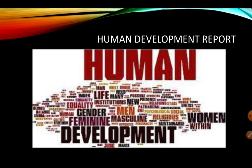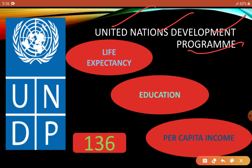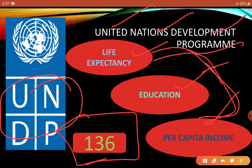Another important concept is the UNDP Human Development Report. UNDP stands for United Nations Development Programme — it is an organization under the UN that publishes this report worldwide. The HDR ranks countries based on three criteria: life expectancy (how long a person is expected to live on average), education level of the country, and per capita income. Based on all three aspects combined, a global list is prepared showing each country's ranking in human development. India's position in this report is 136th.